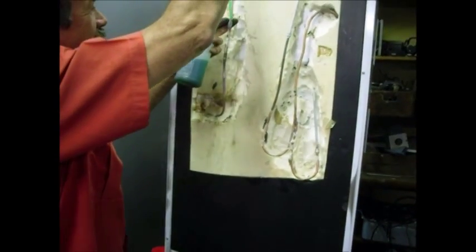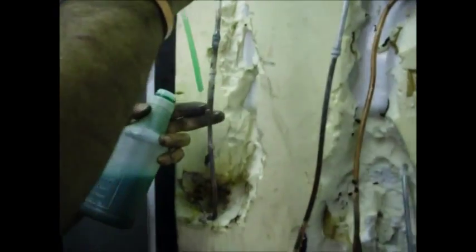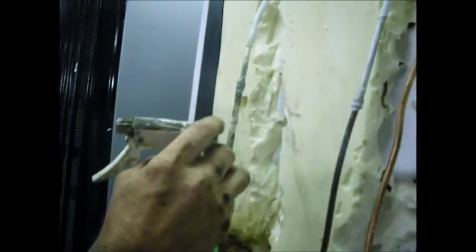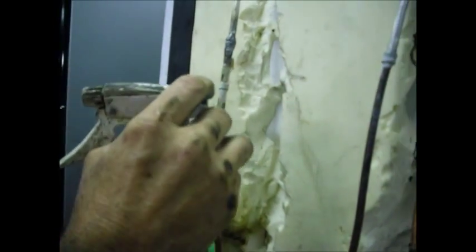We just apply this stuff on freely and if there is a leak on one of my welds, it will show bubbles. No bubbles there. No bubbles there. In the aluminium.